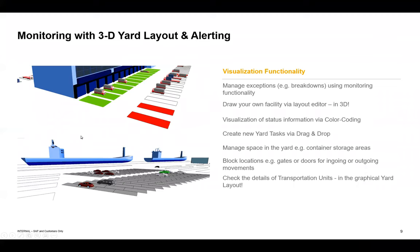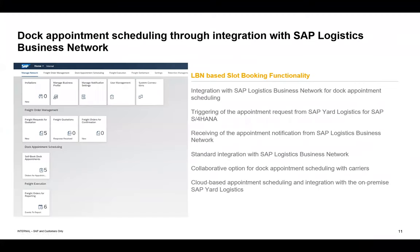Now let's talk about the Logistics Business Network integration. The LBN has a launchpad for carriers where they can book appointments, and those appointments are automatically sent to yard logistics. Conversely, if you create an appointment in yard logistics, it is automatically visible in the LBN for planning. Both directions are supported. Since the LBN solution is cloud-based, it's easy for carriers to access for planning while yard logistics handles execution.